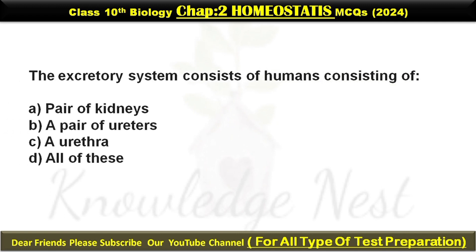The excretory system consists of organs consisting of... Option D is the correct answer.